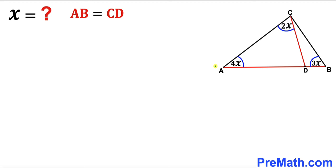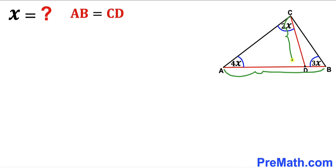Welcome to pre-math. In this video we have triangle ABC along with segment CD inside this triangle, such that angle CAD is 4x, angle ACD is 2x, and angle CBD is 3x. Moreover, segment AB is equal to segment CD. Our task is to find the value of angle x.